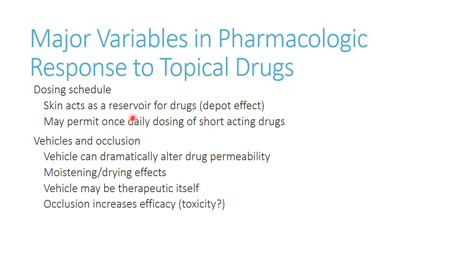The depot effect is especially important with transdermal drugs intended for systemic absorption. For example, fentanyl patches — a very potent opioid for chronic pain — can't provide immediate relief when first applied because the drug hasn't absorbed. It takes roughly 24 hours. So if transitioning a patient from an IV opioid drip to a transdermal patch, you apply the patch, let the drug absorb, then gradually titrate down the IV as the patch takes over.